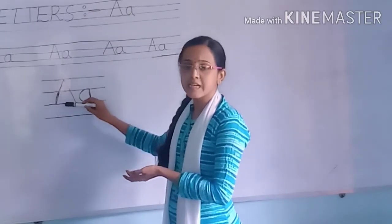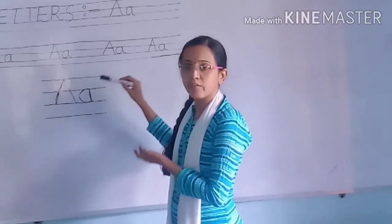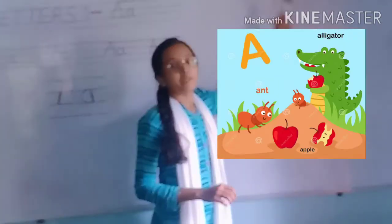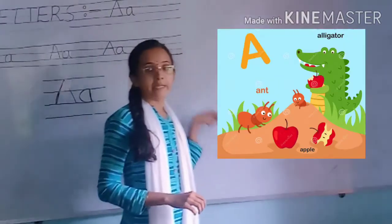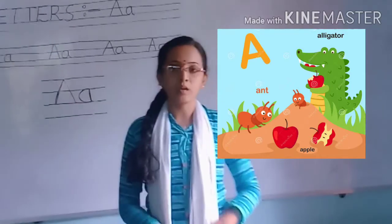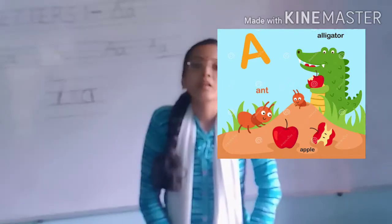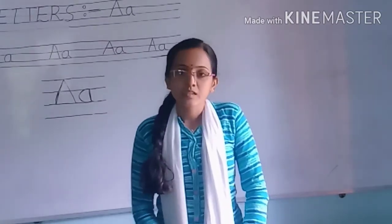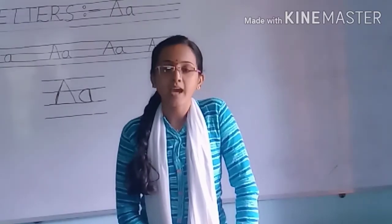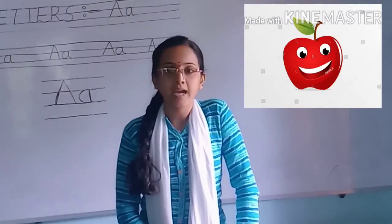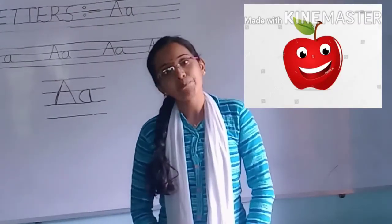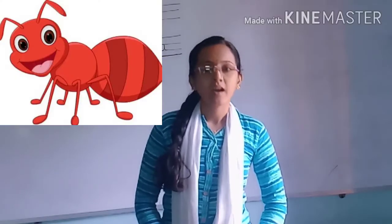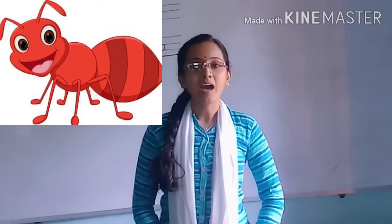We have learnt writing uppercase letter A and lowercase letter A in four lines, and we have learnt pictures starting with letter A. Now we are going to learn the sound of A. A for Apples, A for Ant — A, A, A, A, A.